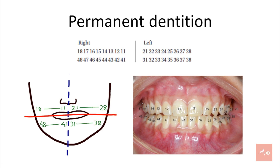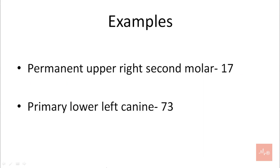Moving on to the permanent dentition in the FDI system. The quadrant numbers are different here: 1 is the upper right quadrant, 2 is the upper left quadrant, 3 is the lower left quadrant and 4 is the lower right quadrant. For example, let's take 4-8: 4 stands for the lower right quadrant and 8 stands for the number of tooth, that is the third molar. So this is the lower right third molar.